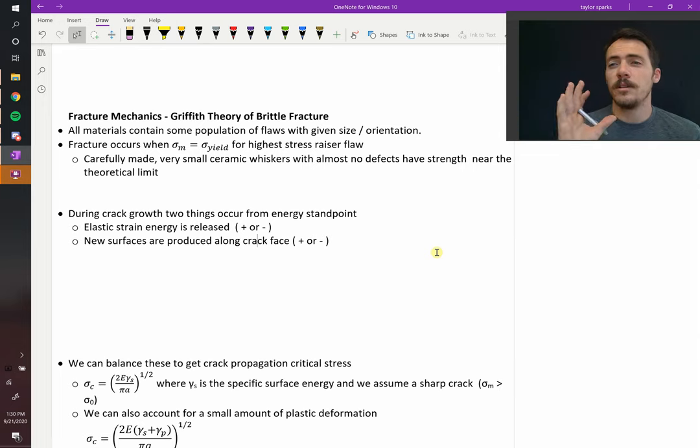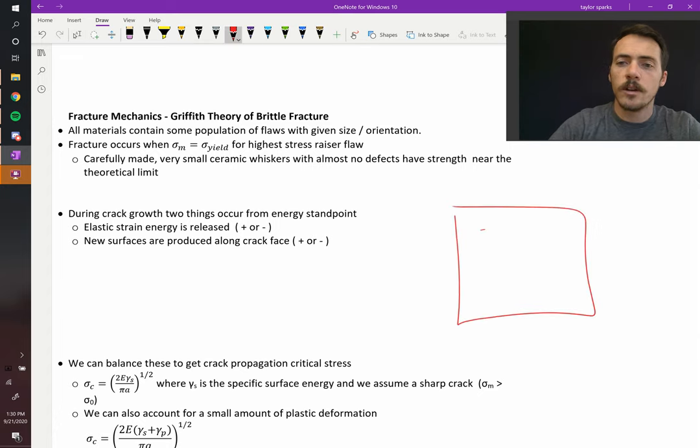First off, it says all materials have some flaws in them. And these flaws can be described in terms of size and orientation and their distribution throughout the material. So if you've got some material over here, it actually has flaws all the way through it.